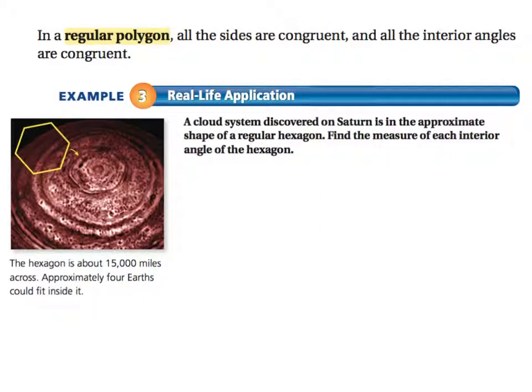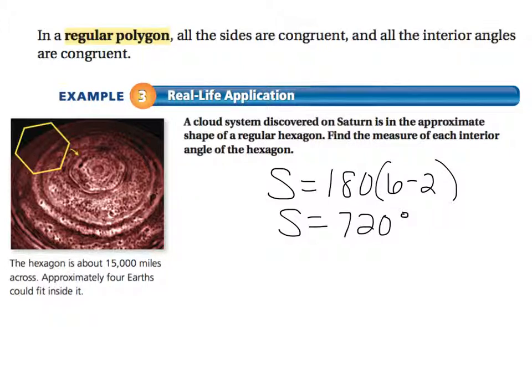In example 3, a cloud system discovered on Saturn is in the approximate shape of a regular hexagon. Find the measure of each interior angle of the hexagon. Well, we have to find what they add up to give me first. So 180 multiplied by 6 minus 2. That's 180 multiplied by 4. That gives me 720 degrees as all of the angles.